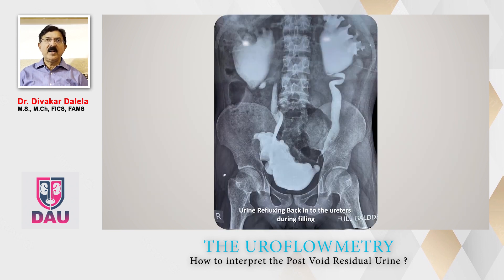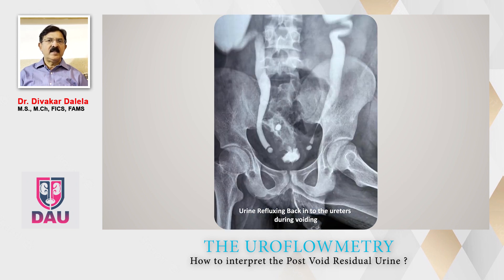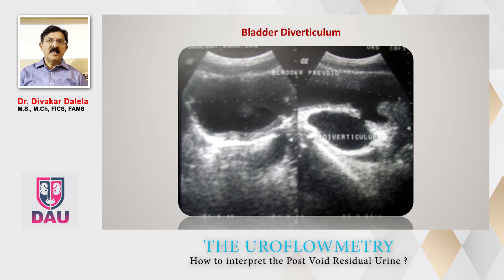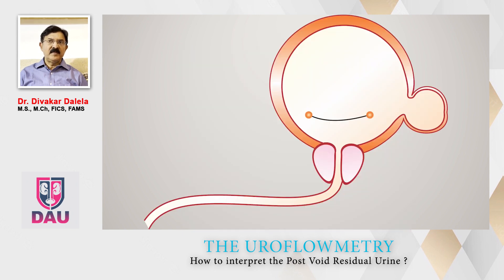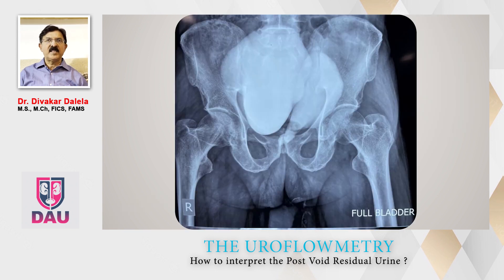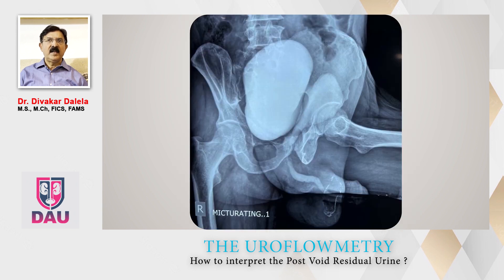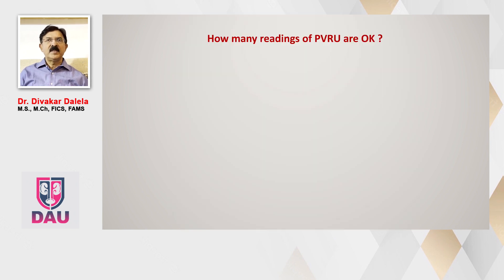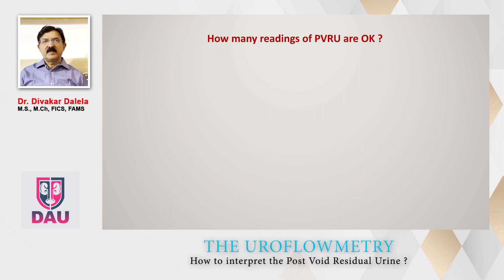Here is a patient who has bilateral grade 5 reflux. Urine reflexes back into the ureters during the filling phase of the bladder. He voids, a lot of urine goes back into the ureter, and when he comes back for reassessment of PVRU, some urine has returned. Similarly, this is the diverticulum — when the patient voids, the diverticulum becomes bigger and bigger because the patient is voiding not outside but into the diverticulum. When he comes back for reassessment, the bladder empties and the diverticulum becomes bigger with further emptying. These are the structural abnormalities giving rise to high PVRU.